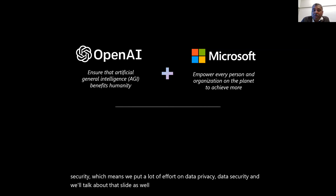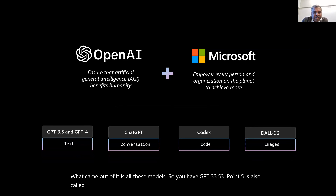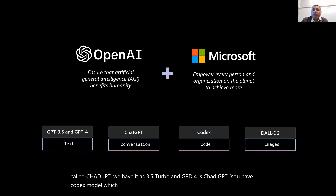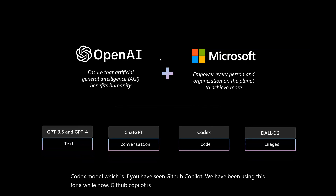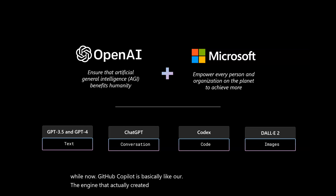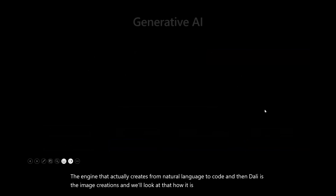What came out of the partnership are models including GPT-3, GPT-3.5 — also called ChatGPT — with versions 3.5 Turbo and GPT-4. We have the Codex model, which powers GitHub Copilot — that's been running for a while now. GitHub Copilot is basically the engine that creates code from natural language. And then DALL-E handles image creation — I'll show you a sample as well.